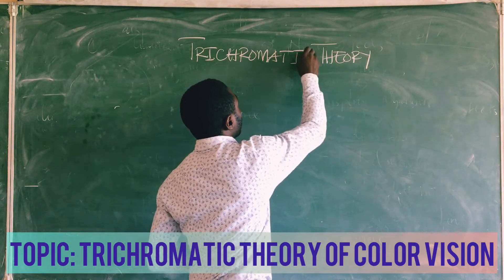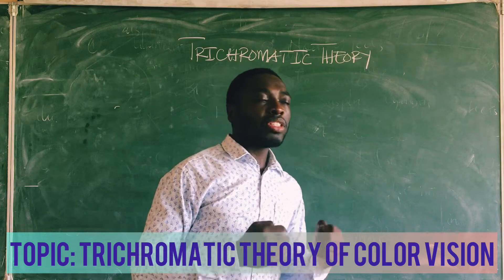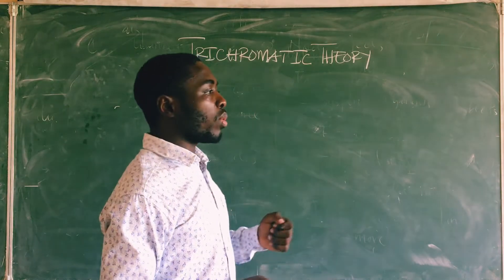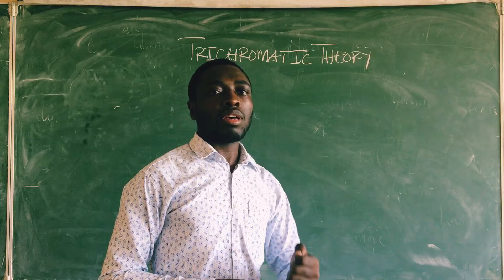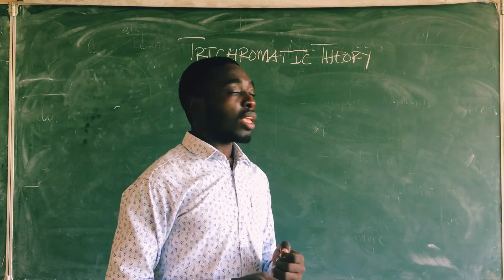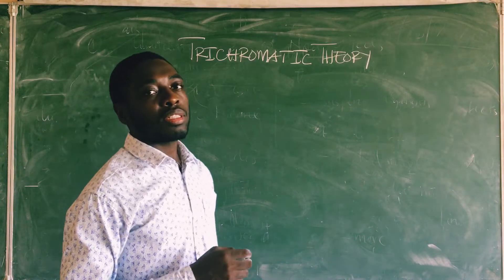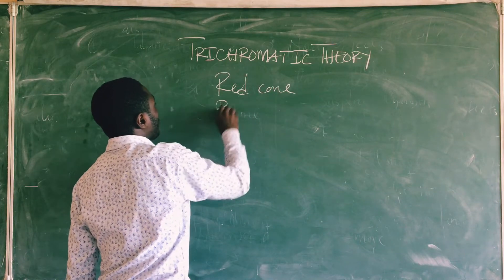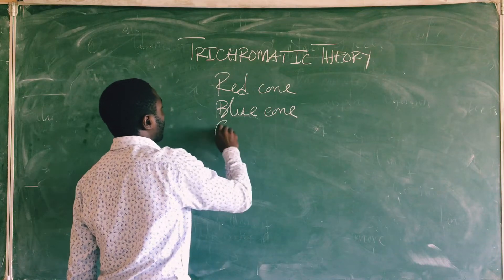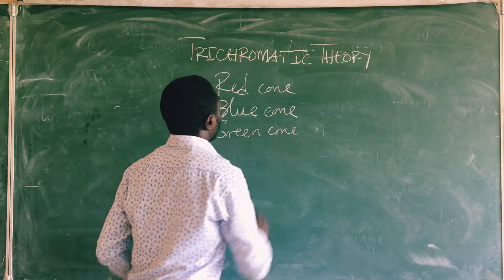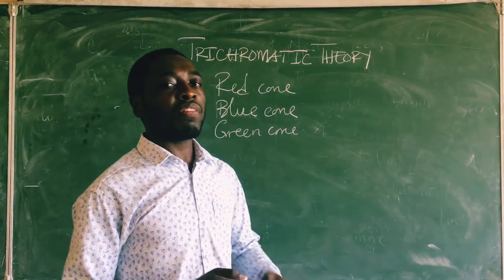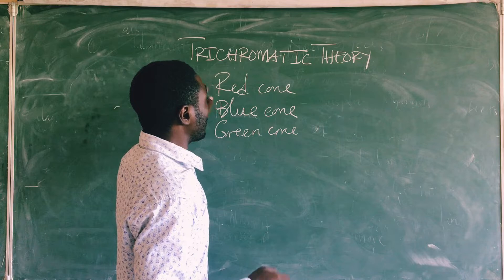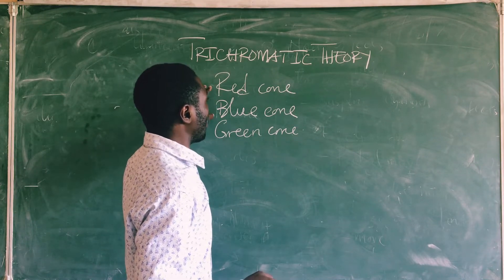The Trichromatic Theory of Colour Vision states that the colour which you perceive will depend on the level of stimulation of some particular cones or cells in the retina of the eye. These cells are found in the cones. We have the red cone, the blue cone, and the green cone. These different types of cones are stimulated by different wavelengths of light, and the colour you perceive depends on the degree by which these cones are being stimulated.